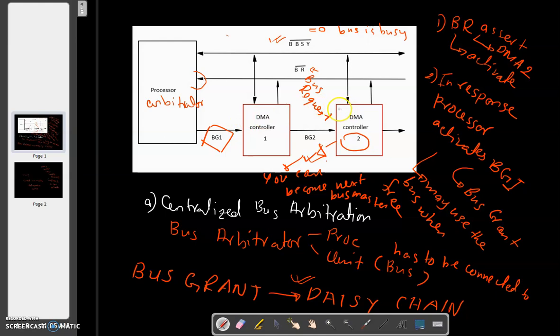Pass on to the next controller. DMA controller 2. Did DMA controller 2 request? Yes, it did. Okay, fine. The processor has said you can become the next bus master. But when can you become the next bus master?